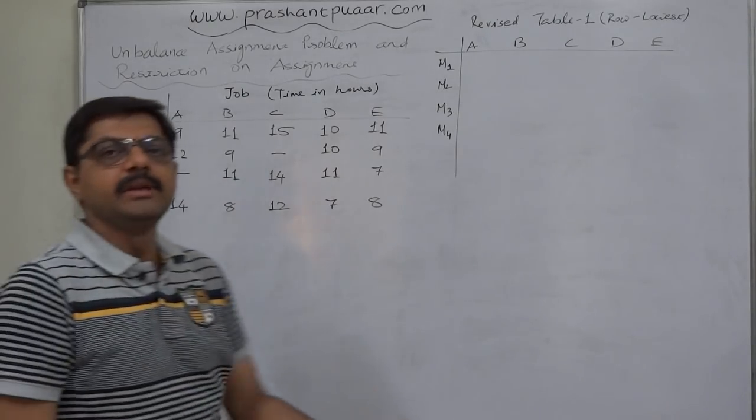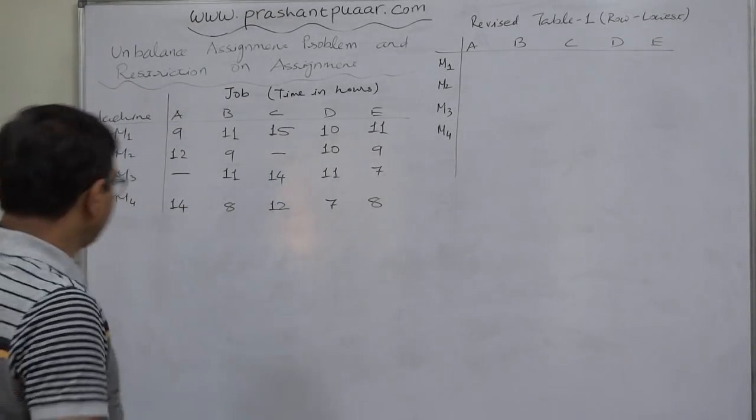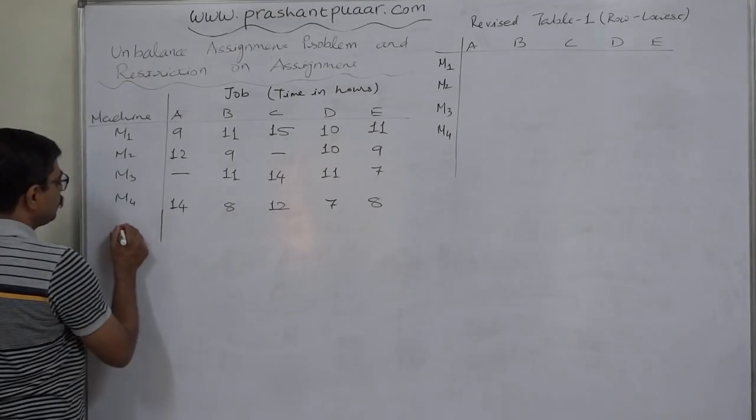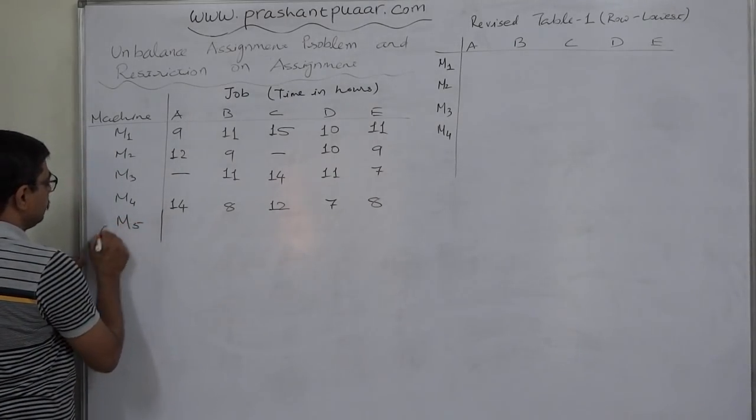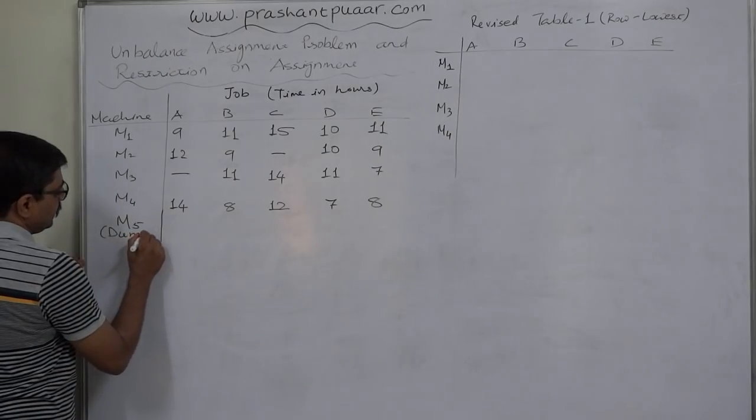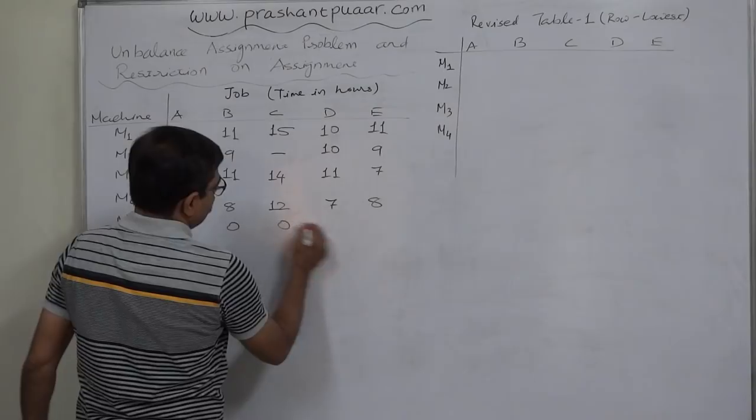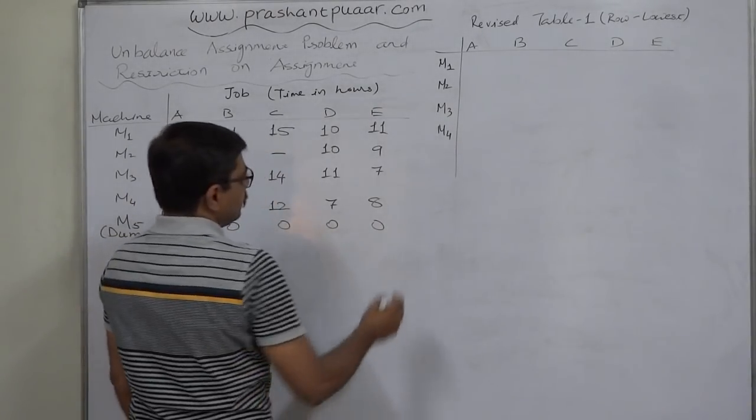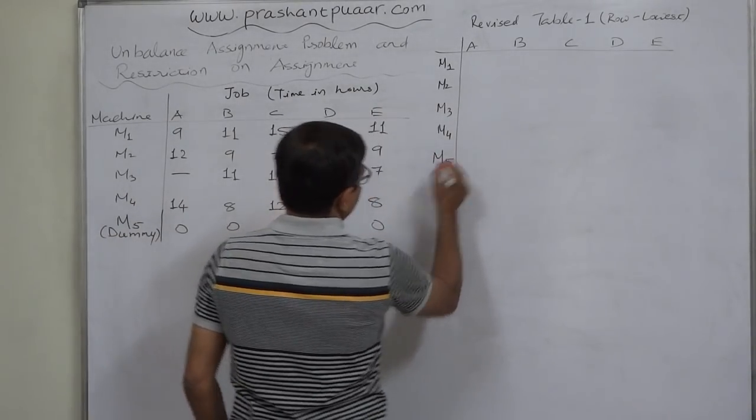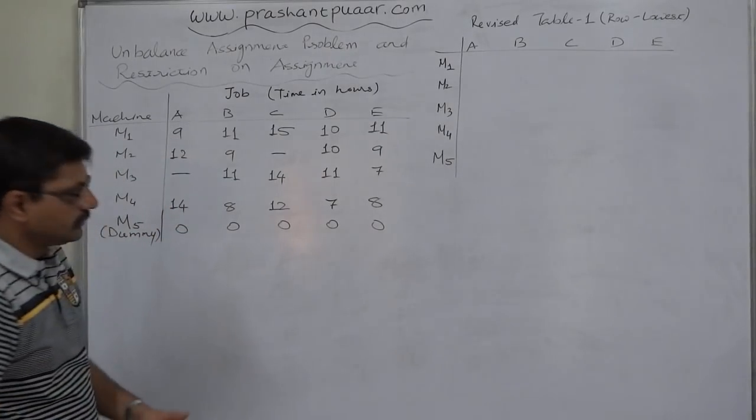If jobs are less than machines, then add dummy job or jobs. Here, machines are less than jobs. So we have to add a dummy machine with zero time or zero cost. Now, what? The same thing.